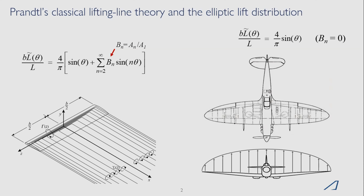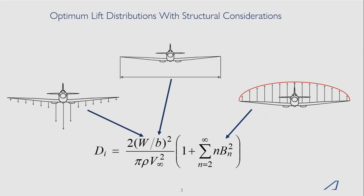Dr. Hunsaker has published a paper giving analytical relationships that show what the twist distribution should be for any given series of b sub n Fourier coefficients for the lift distribution.